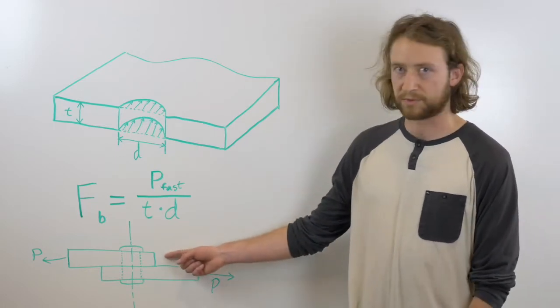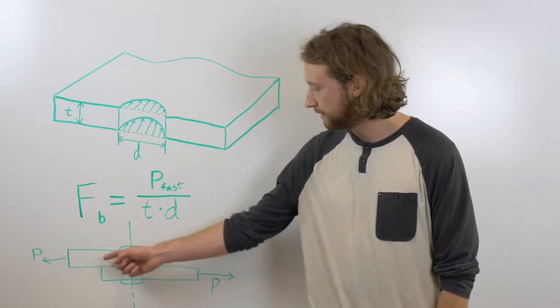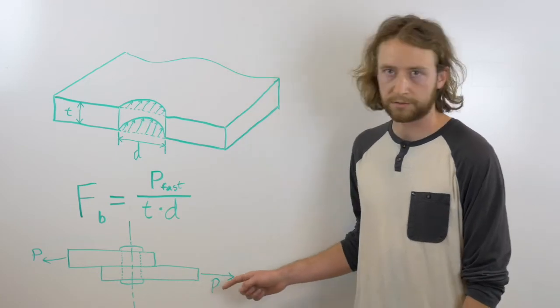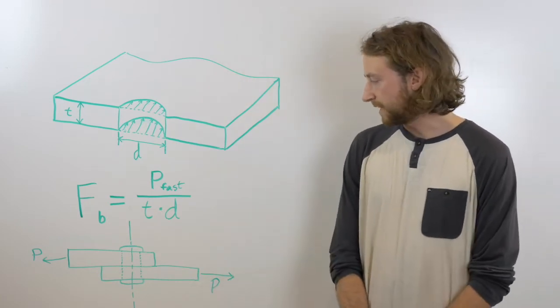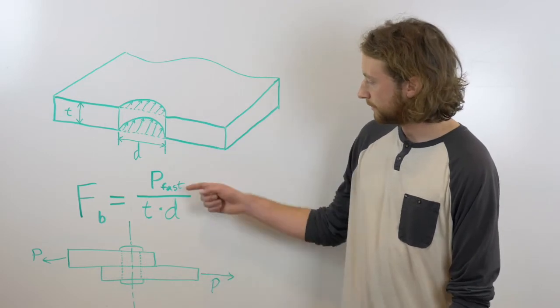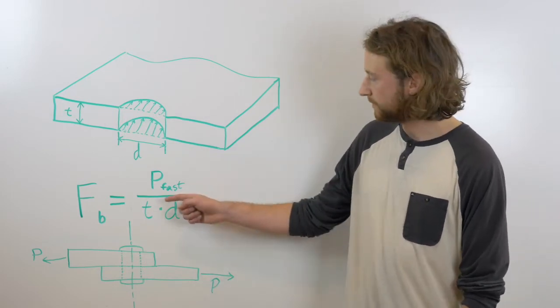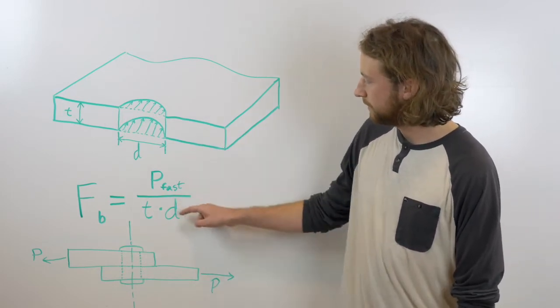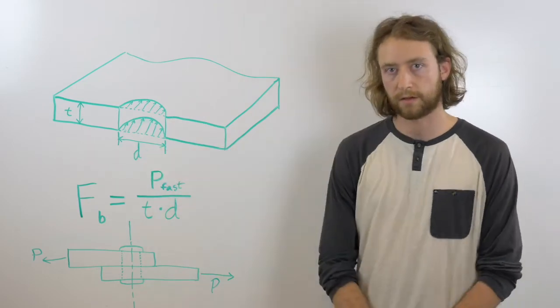Take, for instance, this single lap joint where we have two plates connected by a rivet under load P. To calculate the bearing stress in this plate, we take the load in the fastener divided by the thickness of the plate times the diameter of the fastener.